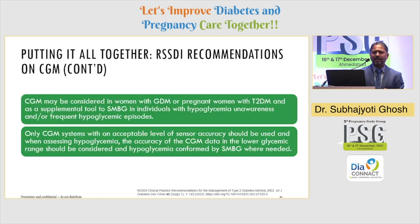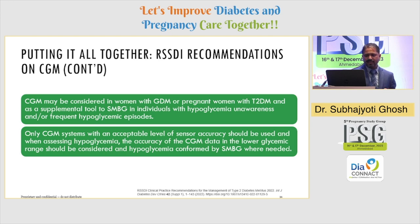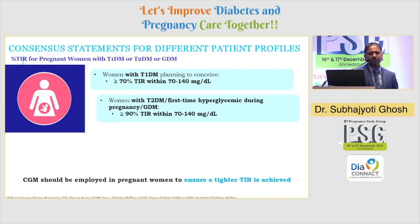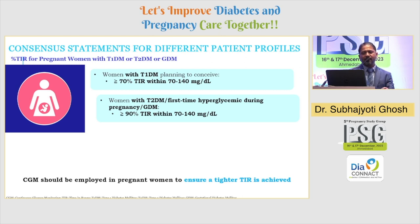These are the ADA recommendations, stating that CGM may be considered in women with GDM or pregnant women with type 2 DM as a supplemental tool to SMBG, particularly in individuals with hypoglycemic unawareness and/or frequent hypoglycemic episodes. The consensus statement says that any pregnant woman with type 1 or type 2 DM or GDM should have more than 70% time-in-range within 70 to 140 mg/dL. For type 2 diabetic patients, more than 90% time-in-range within 70 to 140 is recommended.